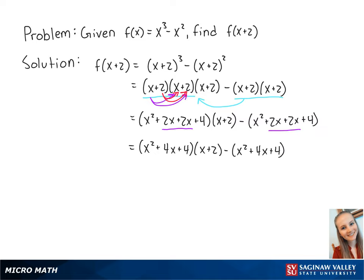Now we want to multiply the first two expressions by distributing. So this becomes x cubed plus 2x squared plus 4x squared plus 8x plus 4x plus 8.